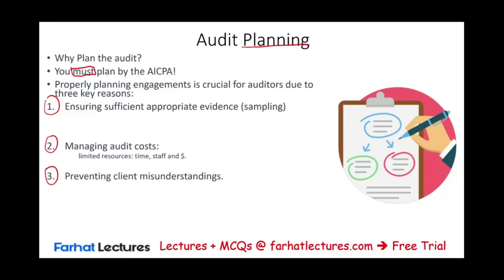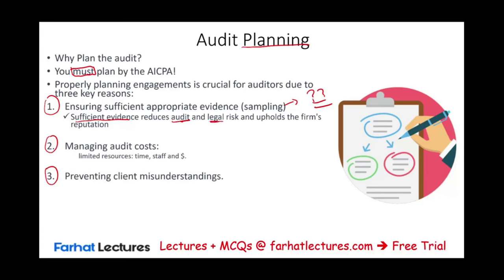When we audit, we sample — we don't look at everything. We have a limited amount of time, therefore we sample. We have to determine how we are going to sample, because this sampling will have to give us sufficient evidence to reduce both audit risk and legal risk, and as a result uphold the firm's reputation. Planning lowers both risk and legal liability, because when you plan you identify which areas require more attention and spend more time on those. You also avoid being sued by the client for not doing your job properly.